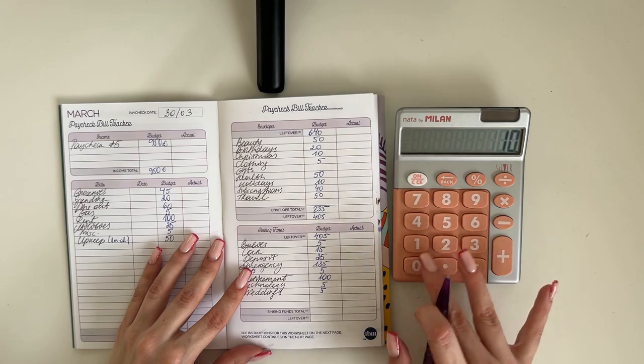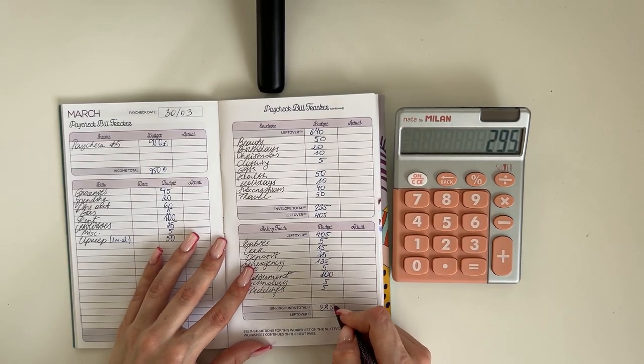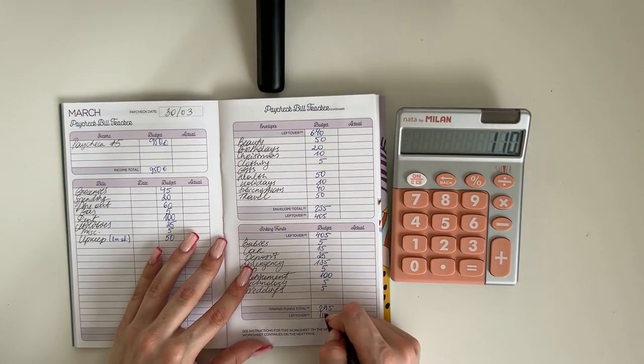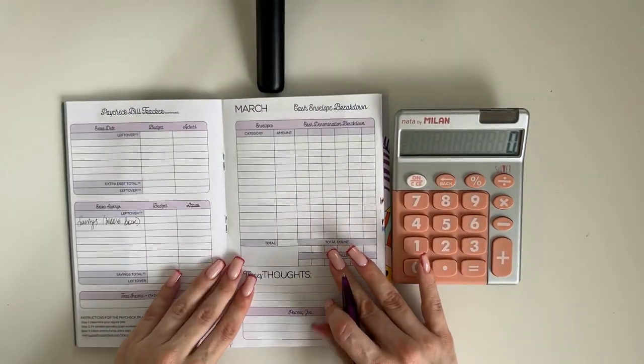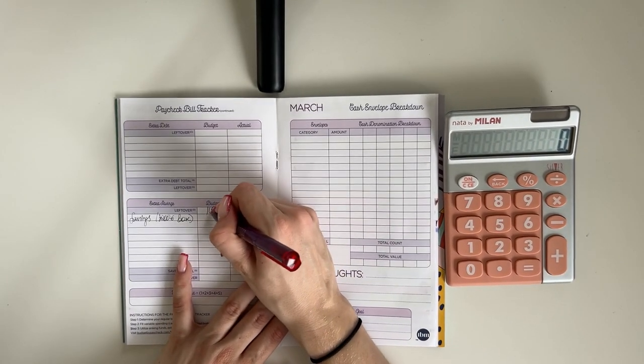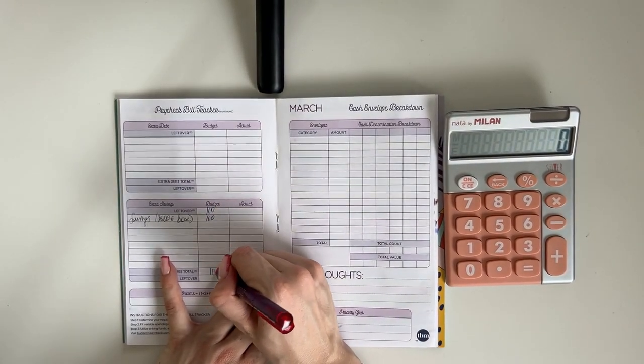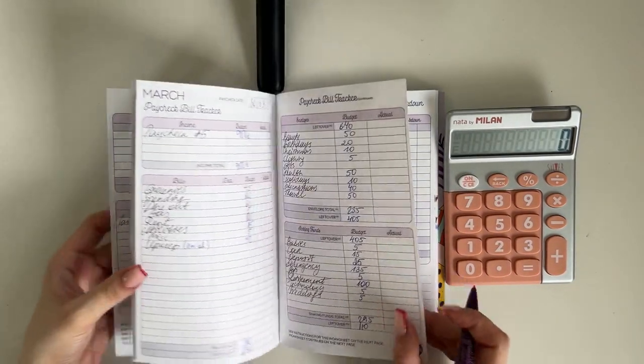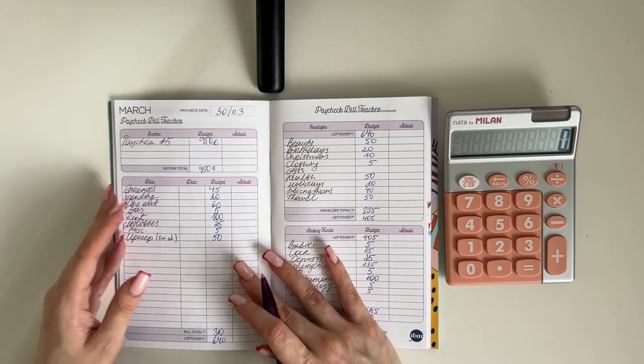So that's in total 295. So 405 minus 295 is 110, and all of that is going into our savings box. So we're putting 110 into the savings. So that is the layout for the last week of March.